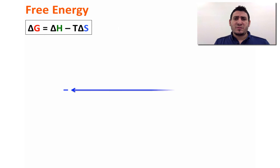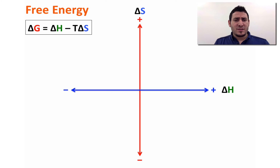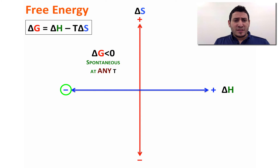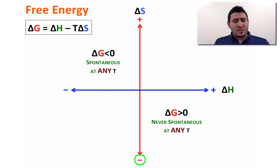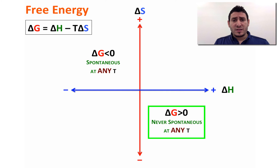How can we predict the sign of ΔG from the signs of ΔH and ΔS? For a negative ΔH and a positive ΔS, ΔG will always be negative and the process will be spontaneous at any temperature. For a positive ΔH and a negative ΔS, ΔG will always be positive and the process will never be spontaneous at any temperature.